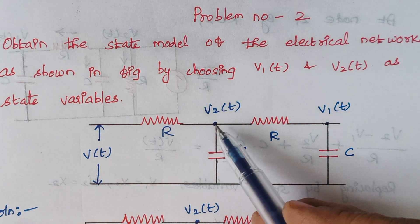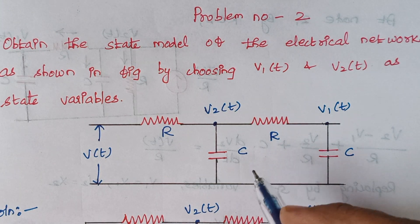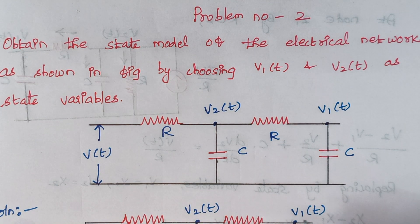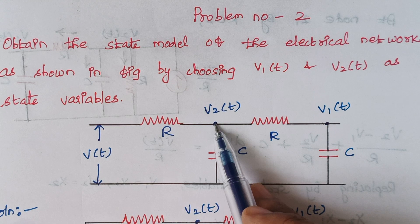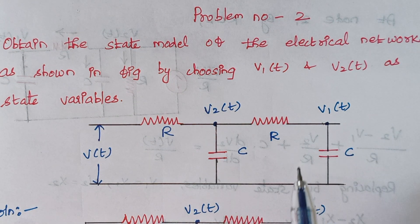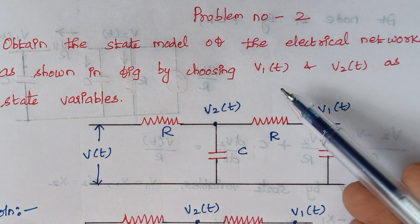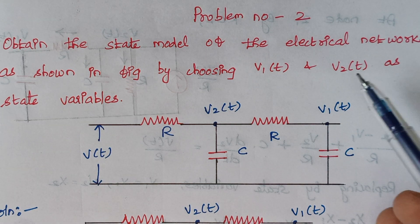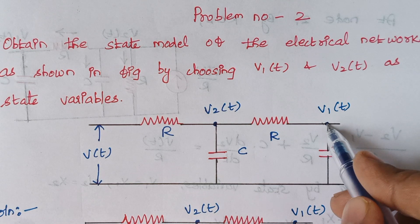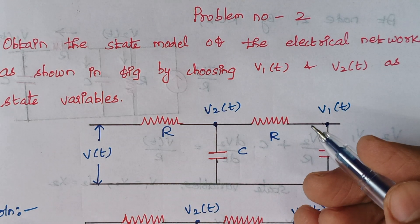A node is nothing but the interconnection of two or more elements — it is a point or junction where two or more elements are interconnected. Here this is one node and this forms the other node. In the problem, V1(t) and V2(t) should be considered as state variables. I have taken this point as V1(t) and this point as V2(t).